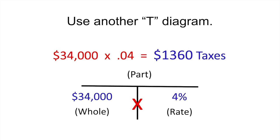If you use a T-diagram and remember to put your big whole number on the bottom left and the rate on the bottom right, you're going to get these right. It's a consistent way of doing these questions. If they give you a part and the rate, then you would divide — take your top number and divide it by either of the bottom numbers to get the other bottom number. That's how you do that.